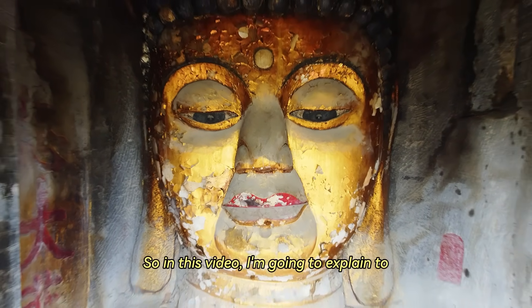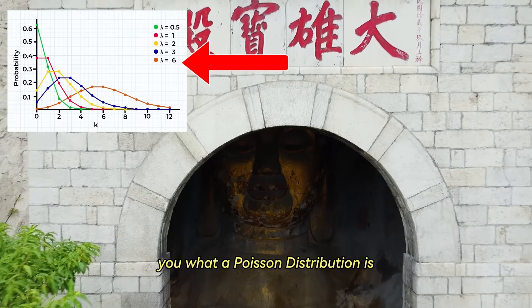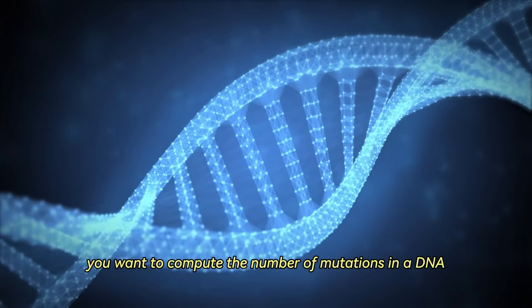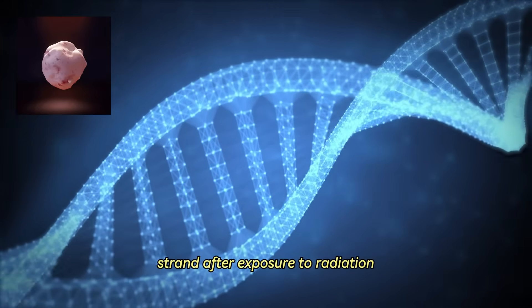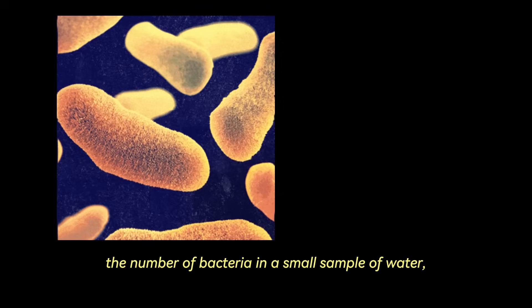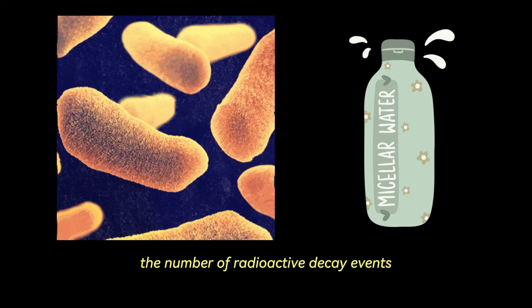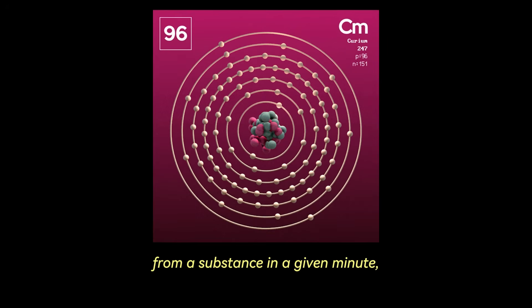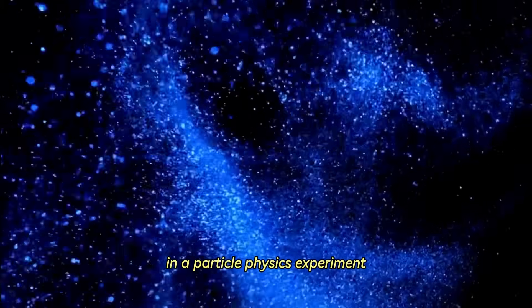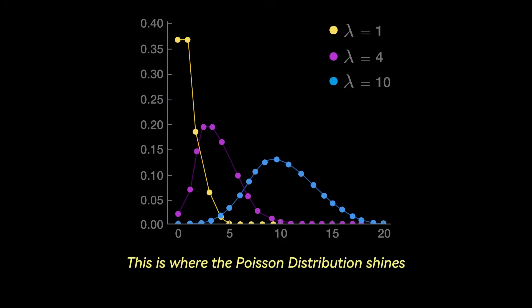So in this video, I'm going to explain to you what a Poisson distribution is. The Poisson distribution is incredibly versatile. Let's say you want to compute the number of mutations in a DNA strand after exposure to radiation, or you want to find the number of bacteria in a small sample of water, the number of radioactive decay events from a substance in a given minute, or the number of photons hitting a detector in a particle physics experiment. This is where the Poisson distribution shines.